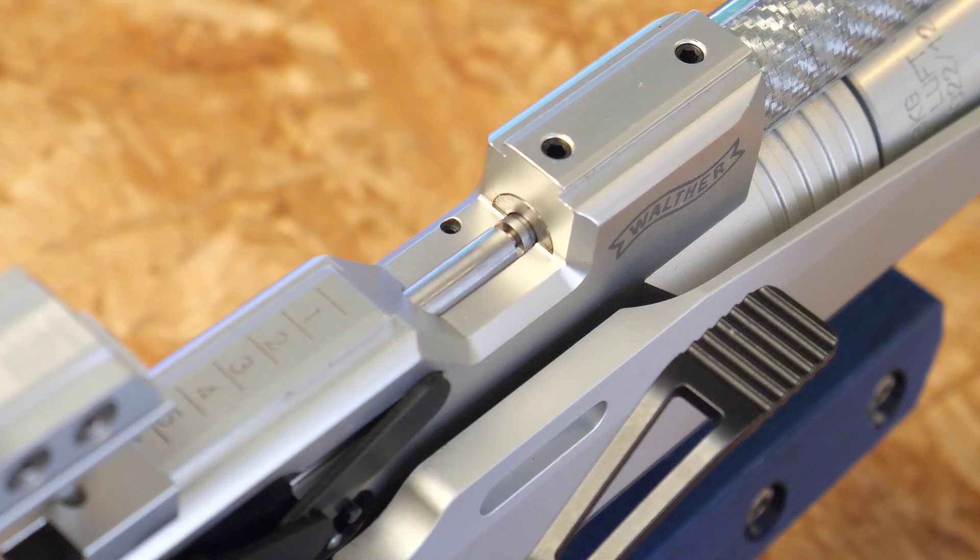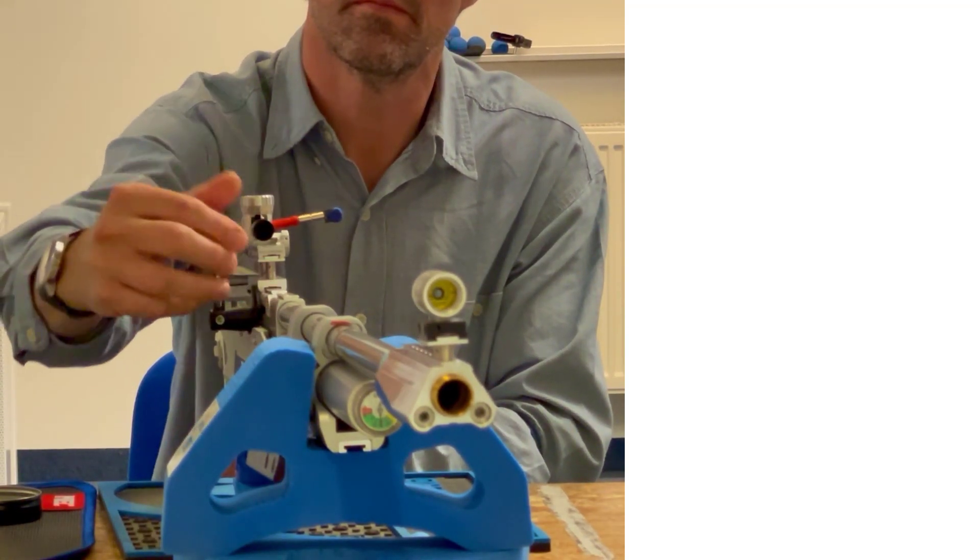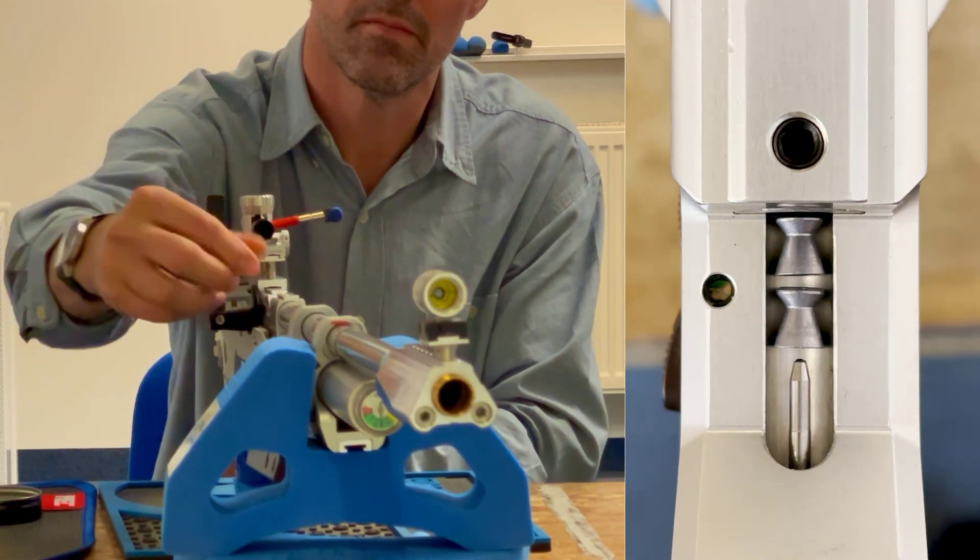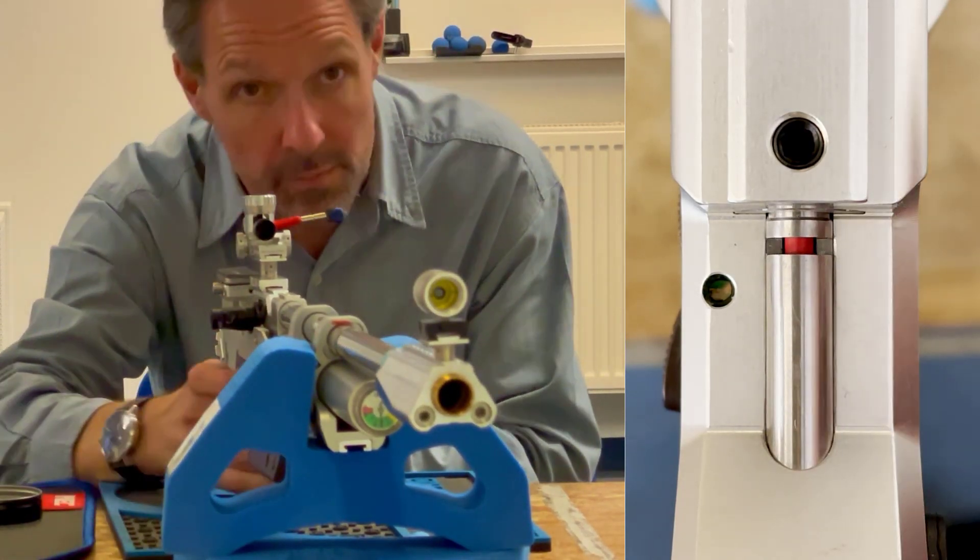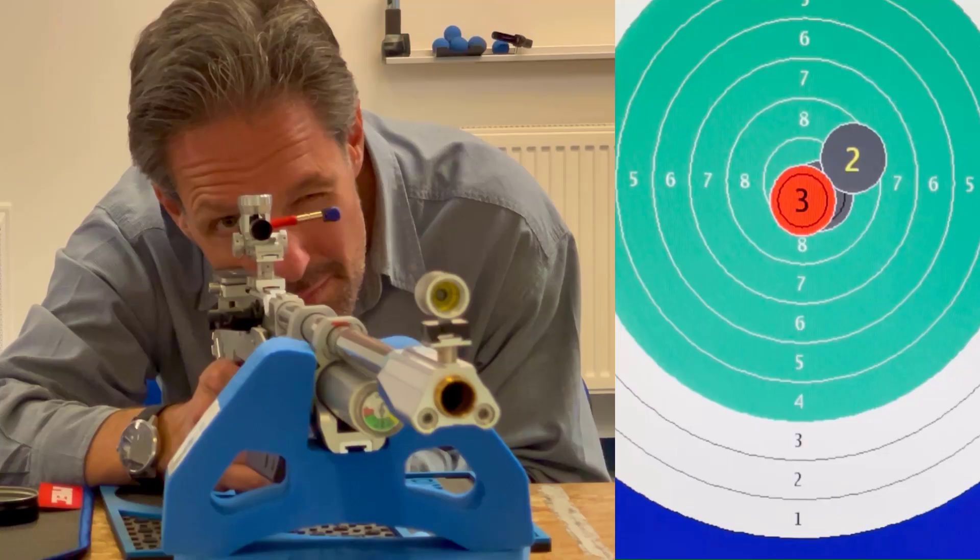Mike double loads for this test. He opens and closes the loading mechanism twice in succession, pushing a pellet into the barrel each time. This is exactly what happens in practice when you are distracted and unintentionally repeat the loading process.